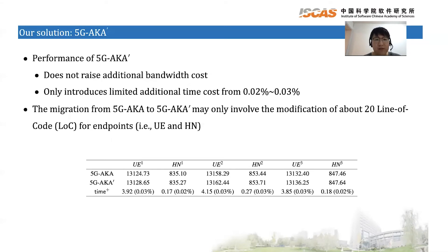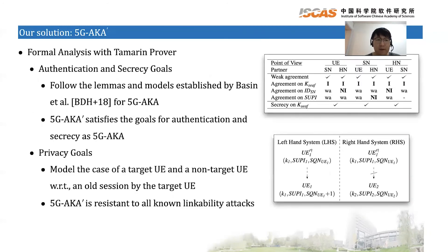5G-AKA prime does not raise additional bandwidth cost as all message formats are preserved the same. It also only introduces limited additional time cost of 200% to 300% as shown by the table. The migration from 5G-AKA to 5G-AKA prime may only involve the modification of about 20 lines of code for both endpoints. We also performed formal analysis for 5G-AKA prime with Tamarin Prover. For the authentication and secrecy goals, we follow the lemmas and models established by Basin and others for 5G-AKA and prove that 5G-AKA prime satisfies these goals. For the privacy goals, we model the case of a target UE and a non-target UE with respect to an old session, and prove that 5G-AKA prime is resistant to all known linkability attacks.